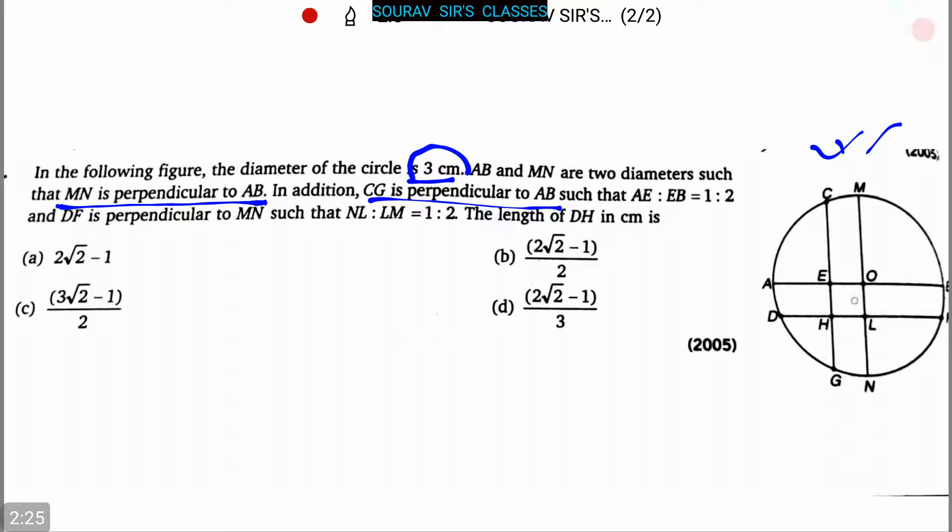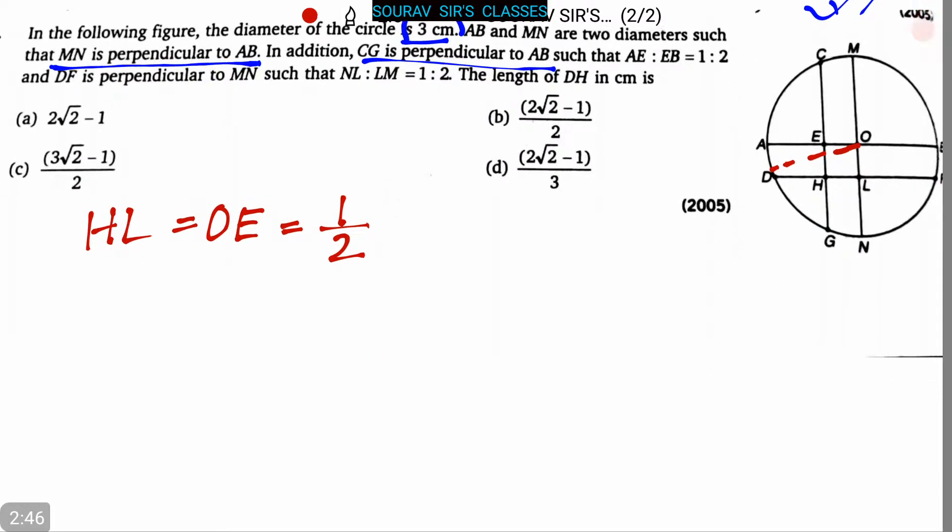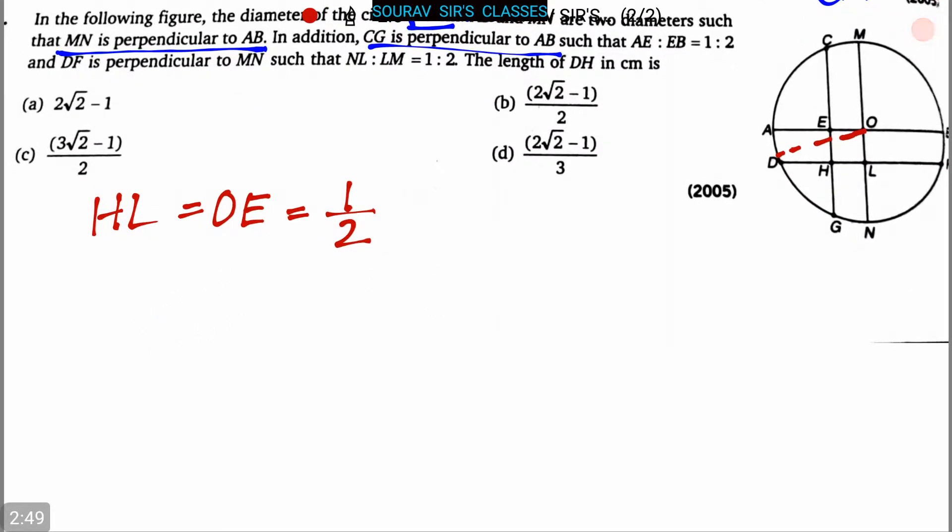Let us draw a line here at first. Now HL is equal to OE is equal to half. Again, from this figure we can say that DL is equal to DH plus HL. Again, now DL is equal to DH plus half.